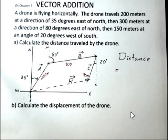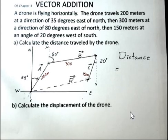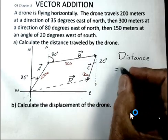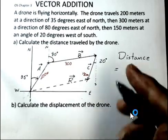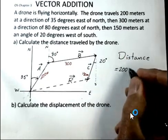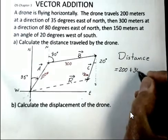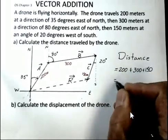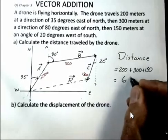Our first task is to calculate the distance. Distance is a scalar, so we do not need to worry about the angles. We just take the total distance, and that's 200 plus 300 plus 150. All those are meters. So our total distance is 650 meters.